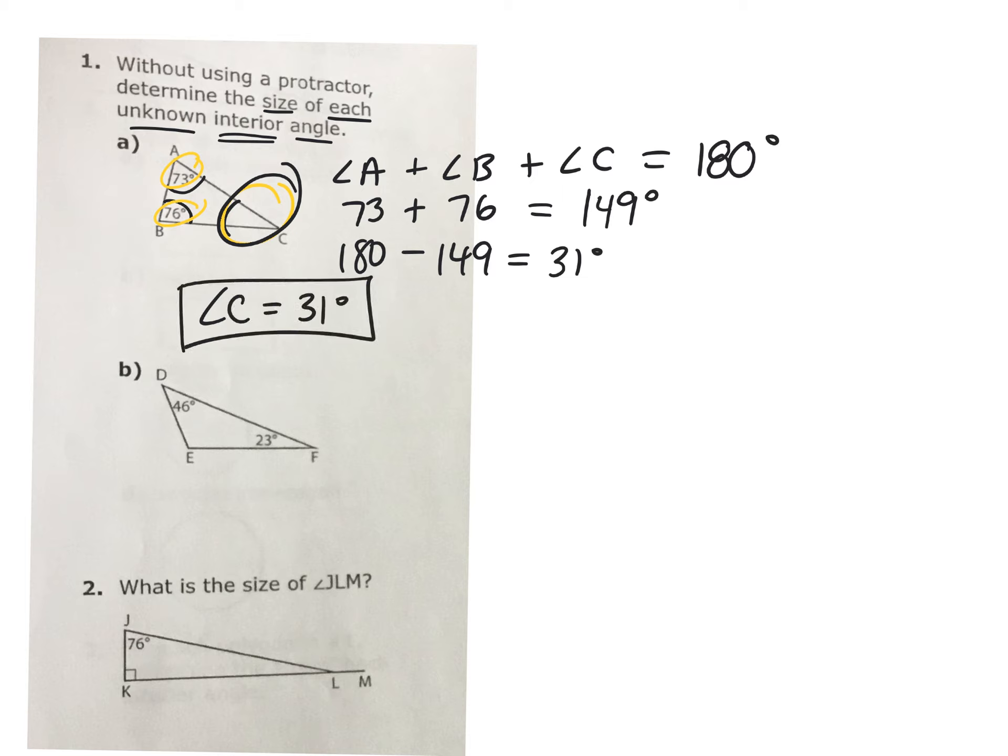I want you to do B on your own right now. We have angle D and F, which are 46 degrees and 23 degrees. We have to figure out angle E. So we have 46 plus 23 equals 69 degrees, but altogether it has to add up to 180. So I'm going to take that away from 180 and we get 111 degrees. Therefore angle E equals 111 degrees.